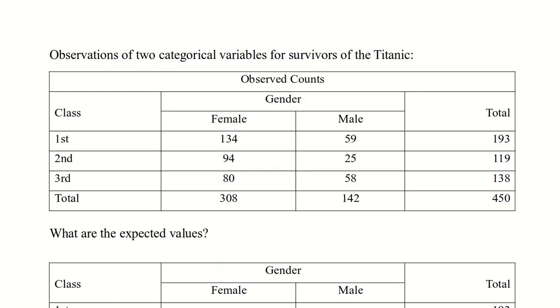Here are two categorical variables for the survivors of the Titanic. The first is gender, and the second is class. So the two genders are male and female. The three classes are first, second, and third. And these are actually the observed counts. The number of women in first class who survived, for example, is 134. The number of third class passengers who were male who survived was 58. And then along the bottom row and the far right column, you can see the totals. That 450 tells us that 450 people survived the Titanic.